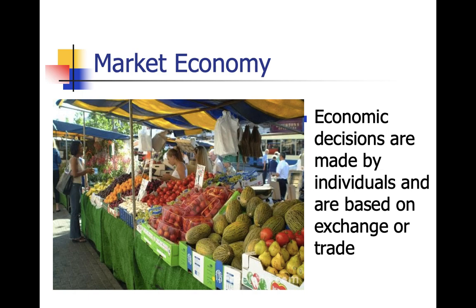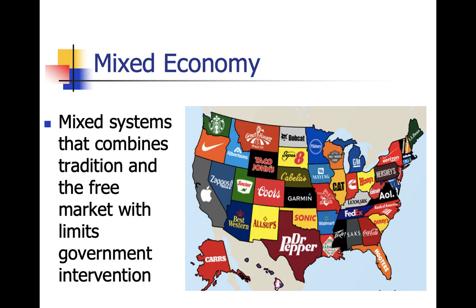The market economy is the invisible hand — it's laissez-faire economics as studied and discussed by Adam Smith. There would be no government interaction in a true market economy. Most economies have some sort of mixed type. Some instances closer to market economies include Singapore, Malaysia, and Milton Friedman's attempt to institute a market economy in Chile. The fourth type, mixed economy, combines tradition with market and some centrally controlled components.